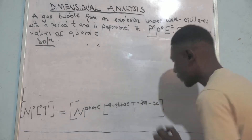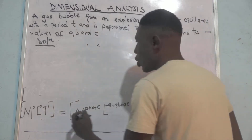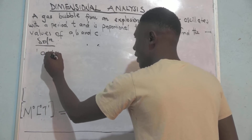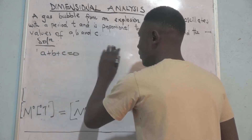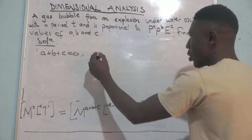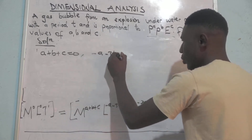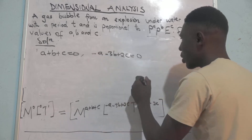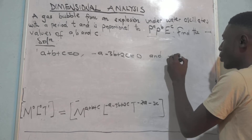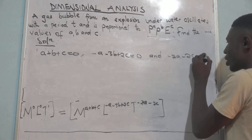Equating the powers, we get three equations: for M: A plus B plus C equals 0; for L: negative A minus 3B plus 2C equals 0; and for T: negative 2A minus 2C equals 1.